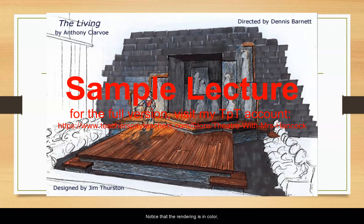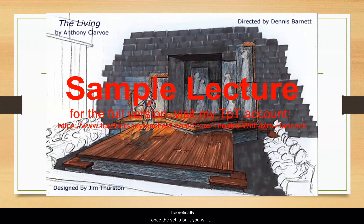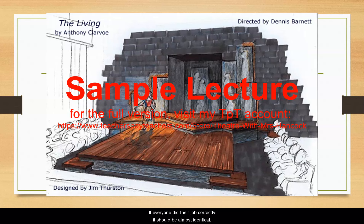Notice that the rendering is in color, uses a figure to show scale, and is taken from one vantage point in the audience. Theoretically, once a set is built, you will be able to find that vantage point in the house and compare the final set to the rendering, and if everyone did their job correctly, it should be almost identical.